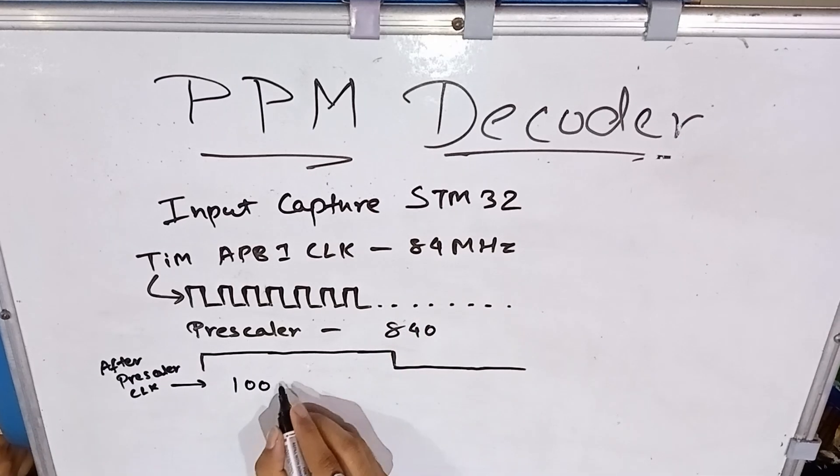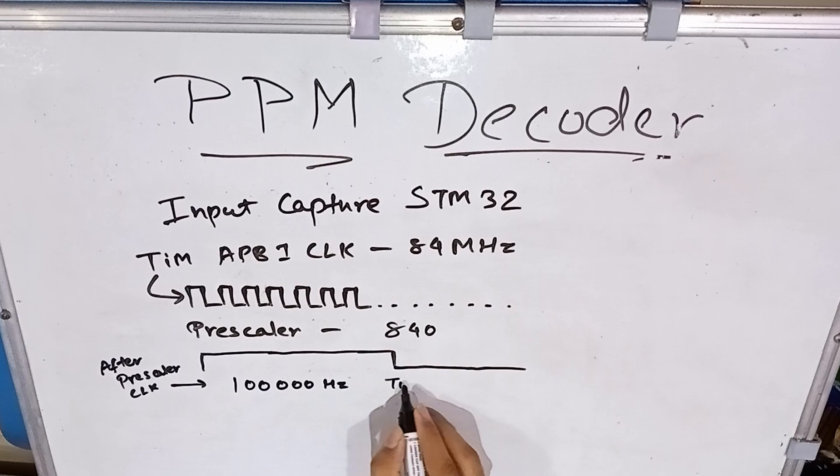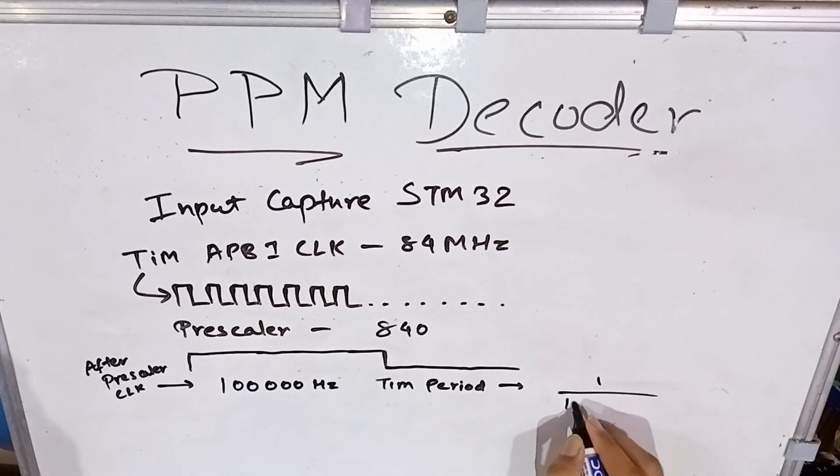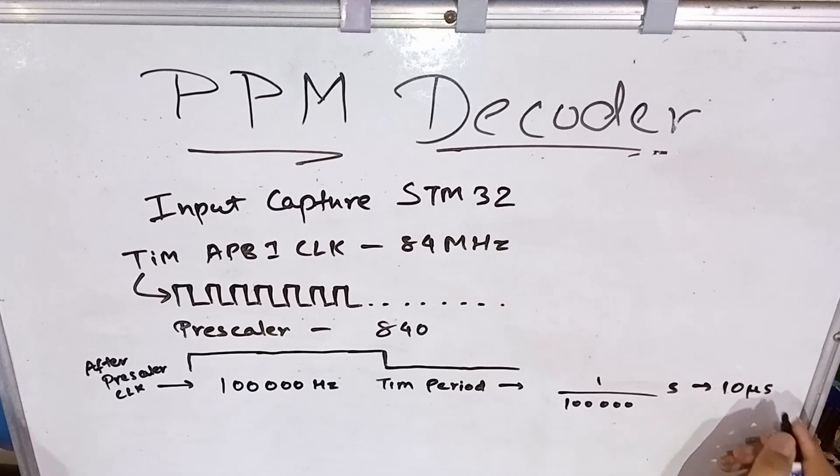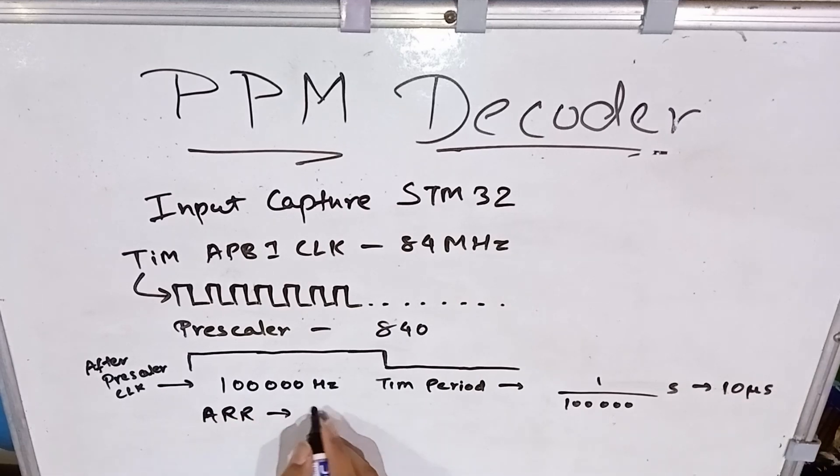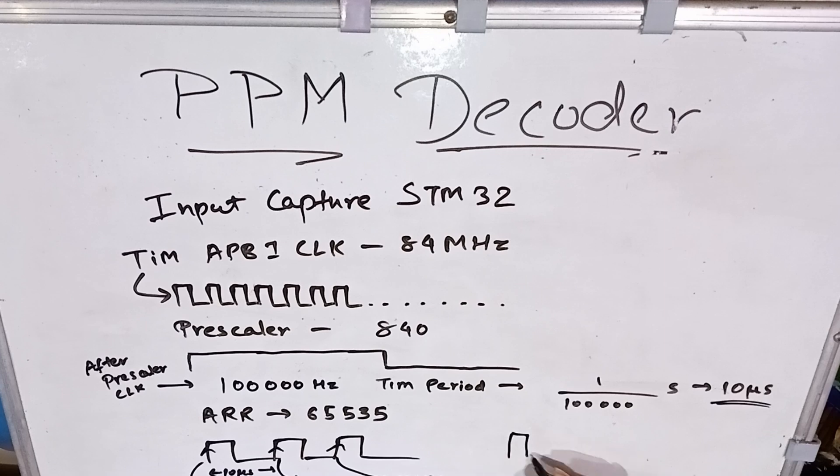After every 10 microseconds our timer counter will increment by one. Now next we have our input PPM signal, so the interrupt would be on the rising edge. Remember, this rising edge. So suppose the first signal comes in, the rising edge hits, and up until the next signal's rising edge is interpreted, till that point whatever the counter value is, based on this counter value multiplied by one counter value is 10 microseconds, based on this we calculate what is the time period of this pulse.